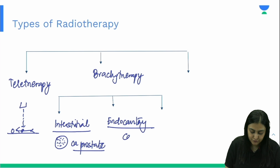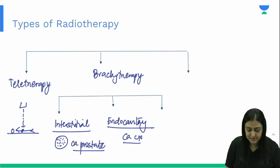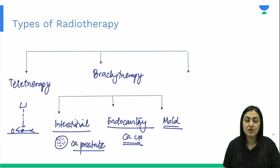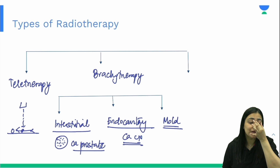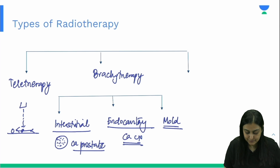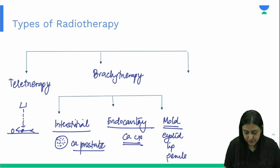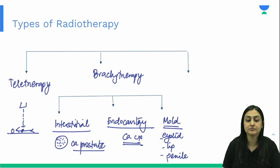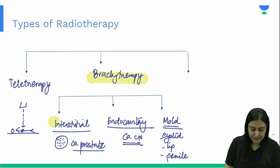The second mode is endocavitary brachytherapy — the prototype is carcinoma cervix, where the radioactive agent is inserted via the transvaginal route to irradiate the cervical cancer. The third form is mold brachytherapy, where molds are created around superficial structures such as eyelid cancer, lip cancer, or penile cancer, placing the radiation source directly over the tumor.